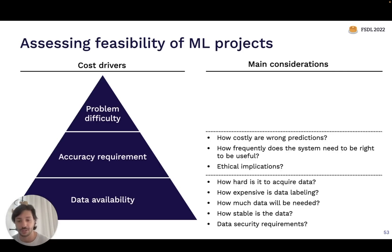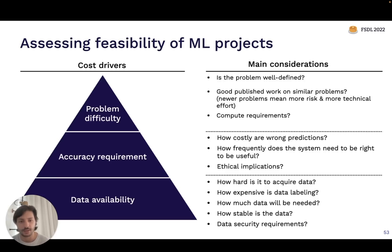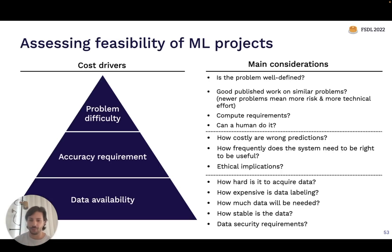The ethical implications of your model making wrong predictions is also an important question. On problem difficulty: is this problem well-defined enough to solve with ML? Are other people working on similar things? If it's a brand new problem no one's ever solved with ML before, that introduces a lot of technical risk. How much compute did it actually take others to solve similar problems — both on the training side and inference side? And can a human do this problem at all? If a human can solve it, that's a decent indication a machine learning system might be able to as well, but not a perfect one.